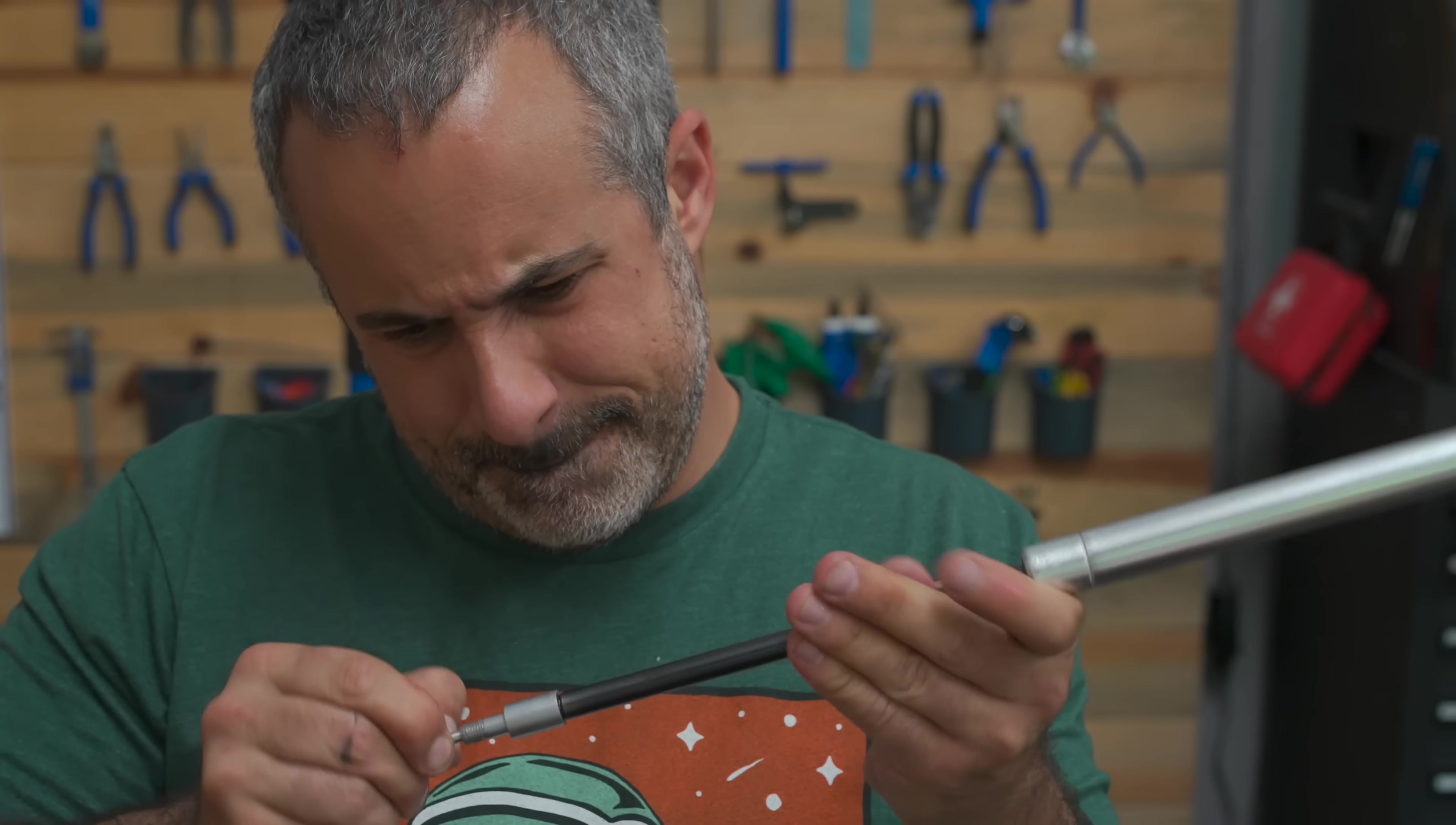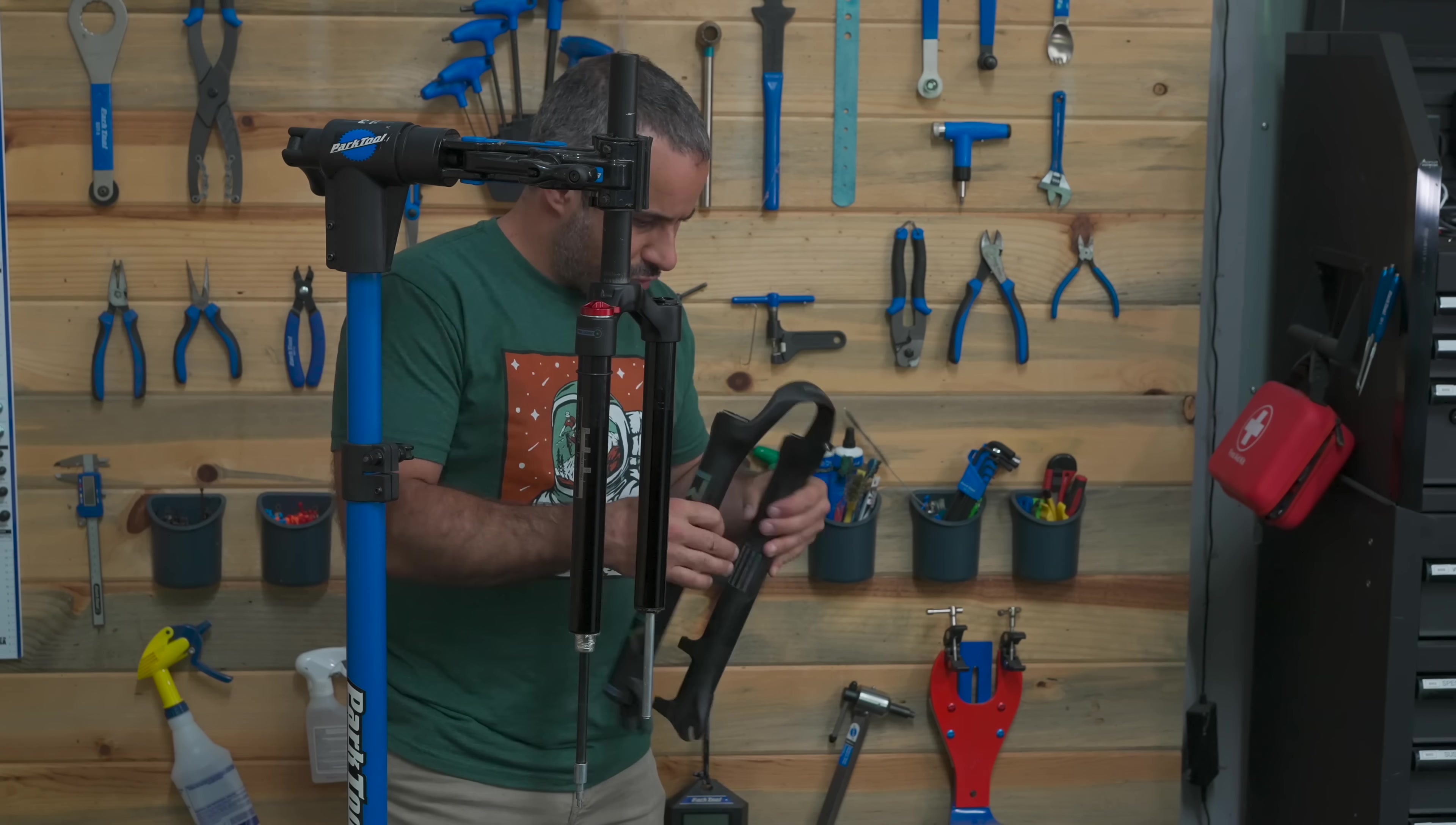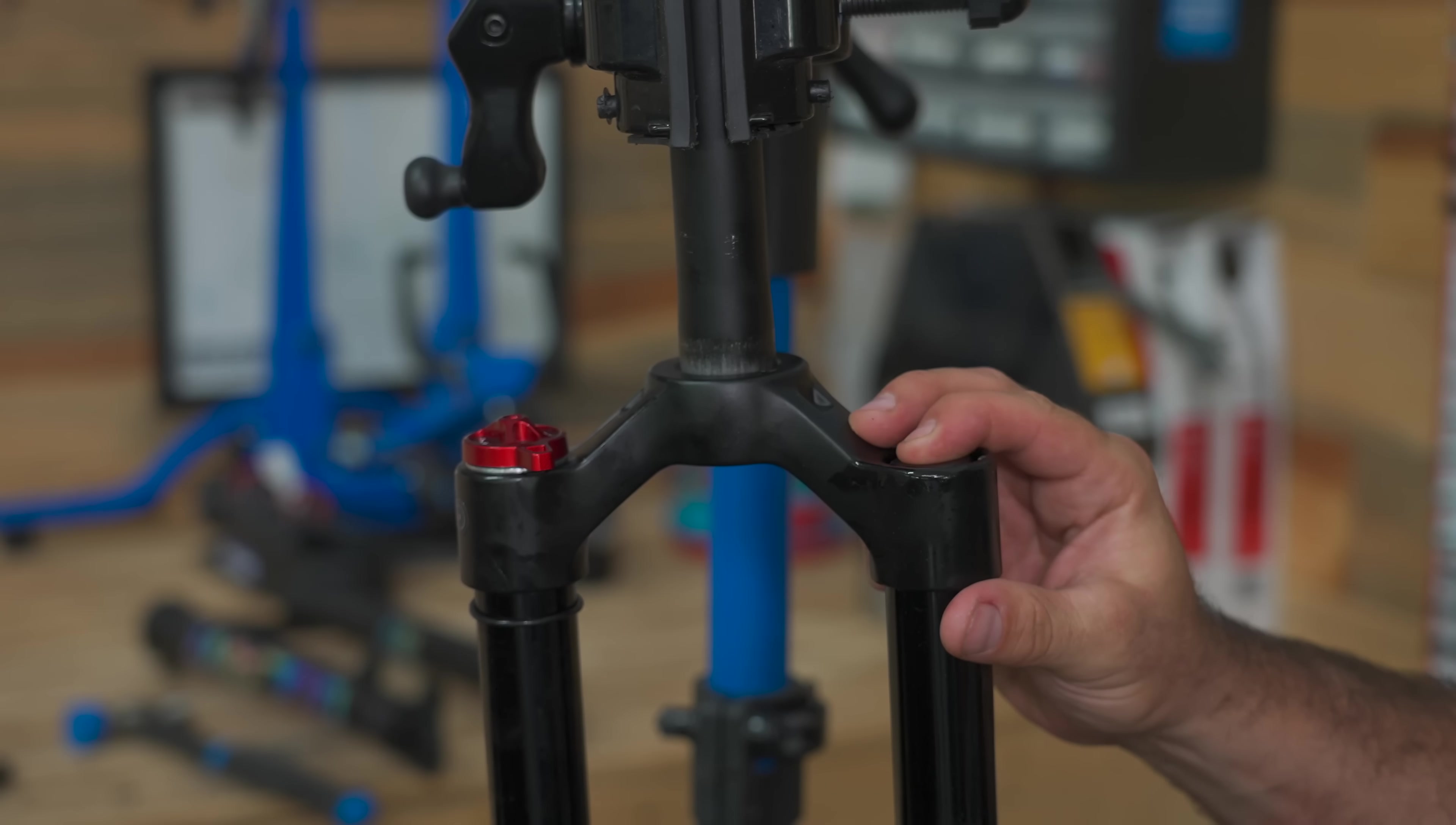My suspicions have been confirmed. The chintziest part of this fork is without question the damper. The rest of it, it's really not that bad. And if it proves to be durable, this is pretty freaking impressive for $130. And so let's put this back together and bring it to the smasher.